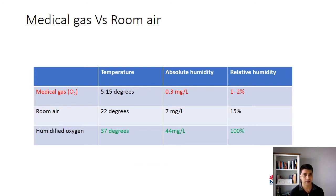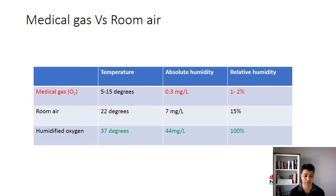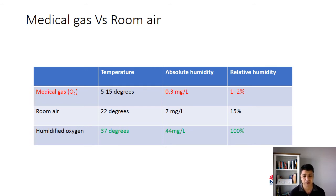Let's have a look at medical gas in comparison to room air and to humidified oxygen. Medical gas is compressed and usually stored in liquid form, with a temperature of around five degrees. At that temperature the relative humidity is very low — around one to two percent only — which is not adequate. In comparison, room air at around 22 to 24 degrees has a relative humidity of only 15%, which is also not adequate, though our upper respiratory mucosa can manage at that temperature. But in patients inhaling medical gas or breathing at a very fast rate, the mucosa cannot cope. If this medical gas is humidified at 37 degrees, the humidity reaches 100%, which is the ideal situation.